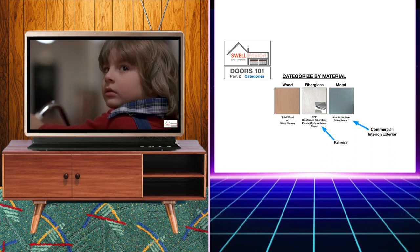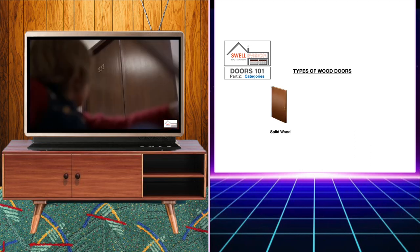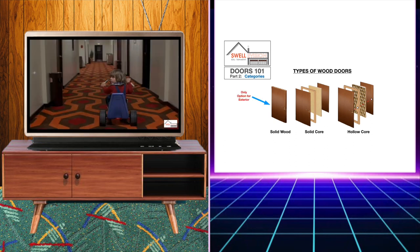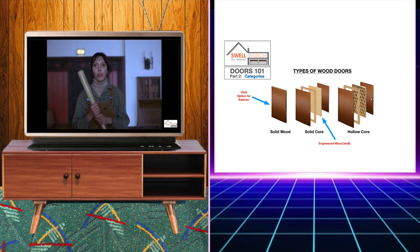Doors made of wood can be solid wood, solid core, or hollow core. Only solid wood doors can be used for exterior and they can be used for interior as well. Solid core doors have a wood veneer and contain engineered wood inside like MDF.